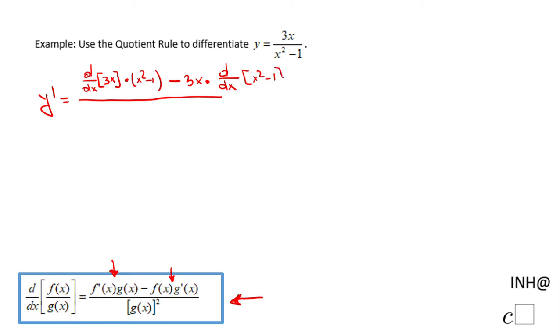So the derivative of x squared minus 1 in this case. And then the denominator for this quotient rule is nothing else than the denominator of our function, which is x squared minus 1 raised to the second power.